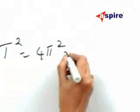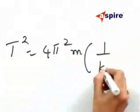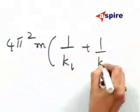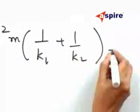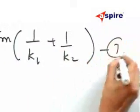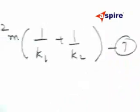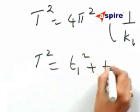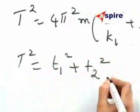Comparing equations 7 and 5, we see that T² = T1² + T2².